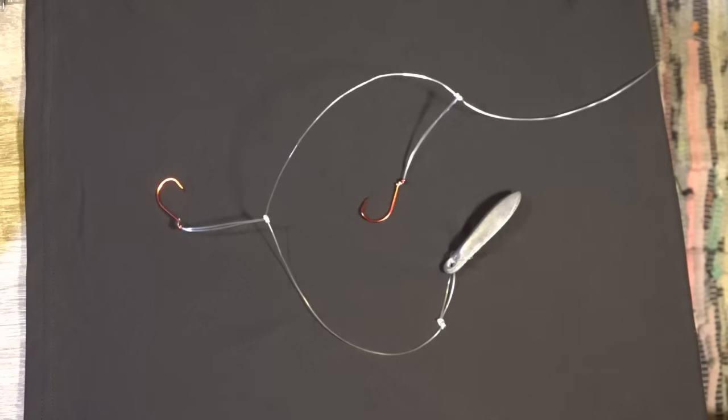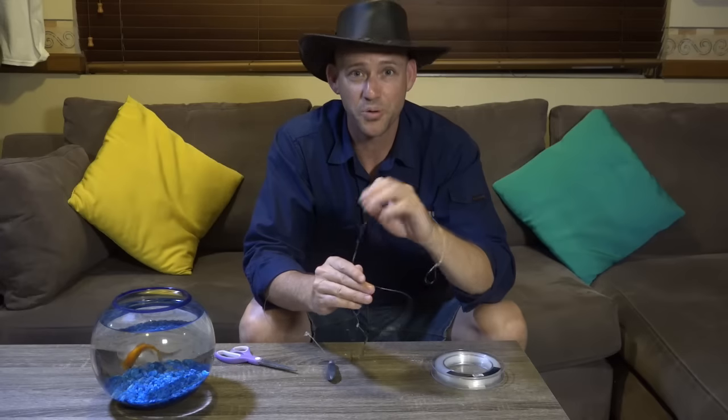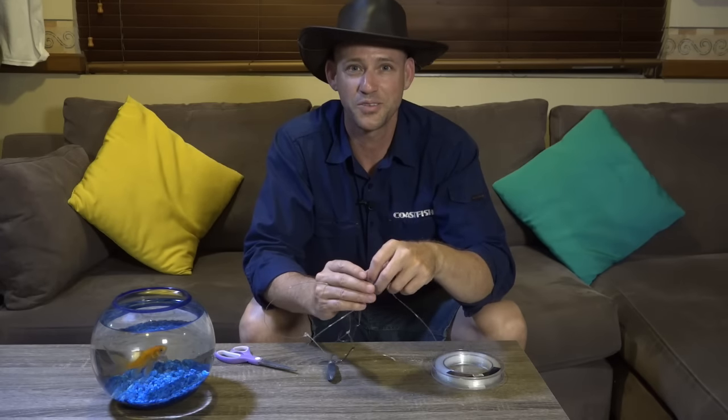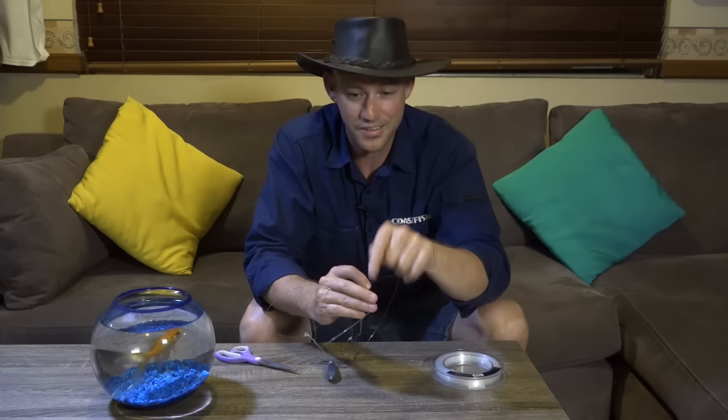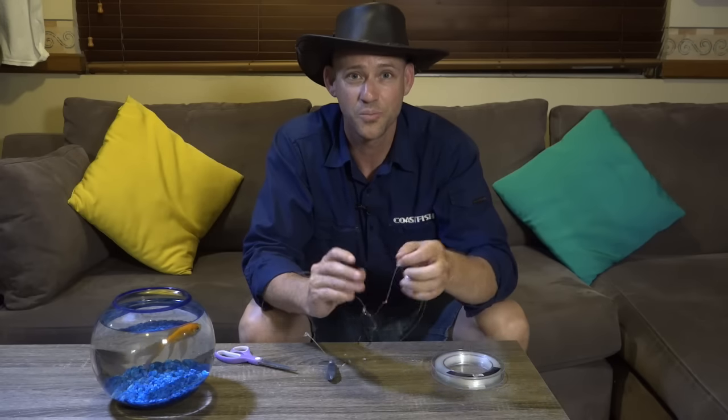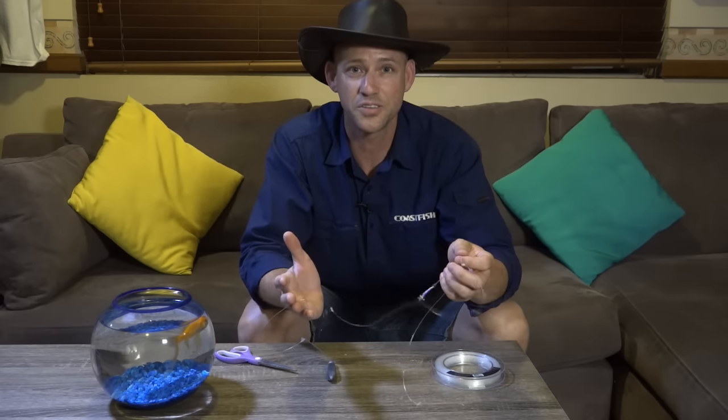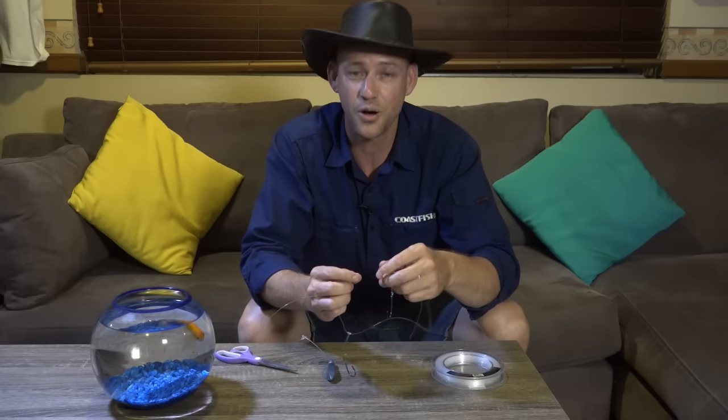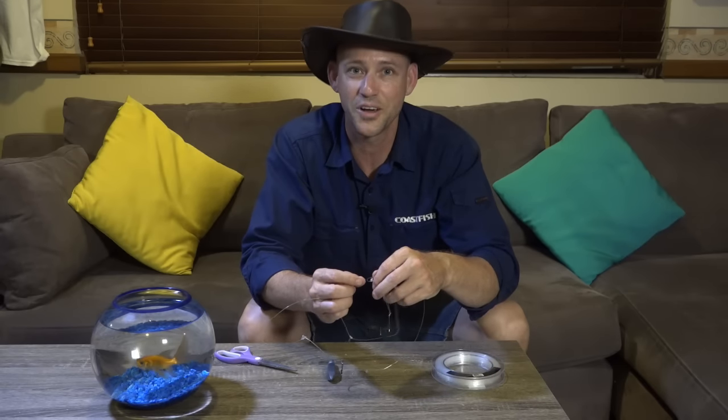So here it is, the Paternoster rig with the dropper loop. I reckon this is one of the easiest ways you'll find to tie this particular rig. I really appreciate you watching, guys. Make sure you give it a like and hit the subscribe button right there, because we've got plenty more content coming soon that's going to make your fishing life a whole lot easier. We'll see you next time on Coast Fish TV.